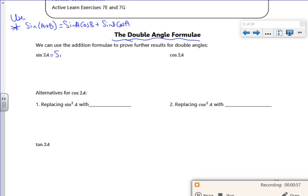So here, for sine 2a, if I see it as sine of a plus a, then I can just replace this b with an a. So I would get sine a cos a plus sine a cos a. I've got two lots of the same there, two sine a cos a. And that's quite an important formula for us this year, because it helps us out quite a lot.